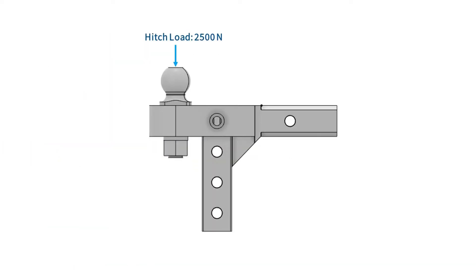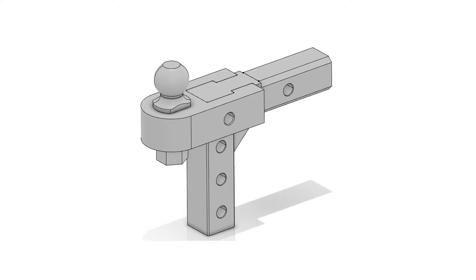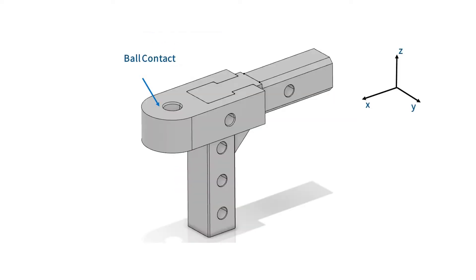The hitch must support a 2500N hitch load and a 26kN pulling load. We need to decide how we are going to restrain and load the slotted lug component. First, let's remove the lock pin. We are going to replace the pin contact with a restraint acting in the X and Z directions. This will require us to create some geometry that we can use to create a group of nodes. We will also want to make sure the mesh follows this edge. The loads are transmitted through the center of the ball, so we will create a point at this location. We can use this point to apply a remote force. We also need to create a surface where the ball contacts the lug. We will use this surface to transmit the hitch and pull loads applied at the center of the ball to the lug.